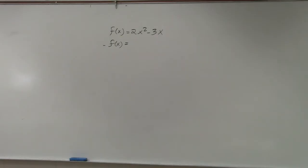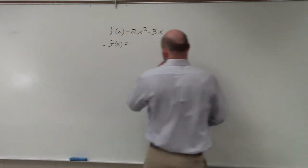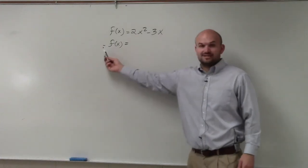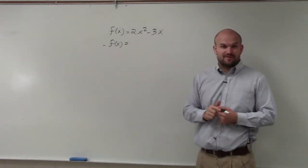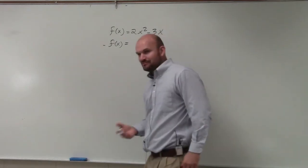Okay, so they're telling us that f(x) = 2x² - 3x, and they want us to find the negative of f(x) - not subtraction, but multiplying by the negative of f(x).